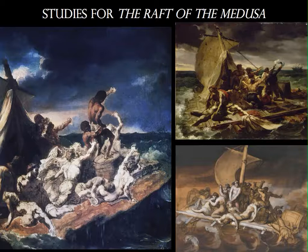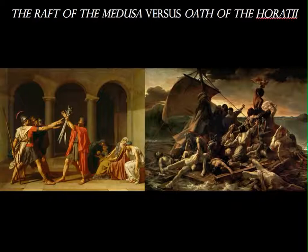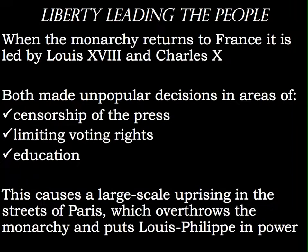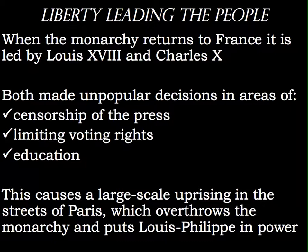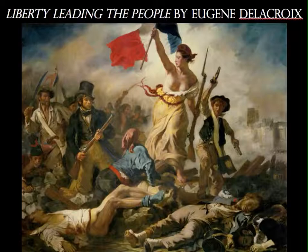Here are a few of the other sketches Géricault was creating. These paintings hang across from one another in the Louvre today. Our next image is Liberty Leading the People. When the monarchy returned to France, led by Louis XVIII and Charles X, both made unpopular decisions regarding censorship of the press, limiting voting rights, and returning education to the church. This caused large-scale uprisings in the streets of Paris, leading to the overthrowing of the monarchy and the installation of King Louis Philippe in power.